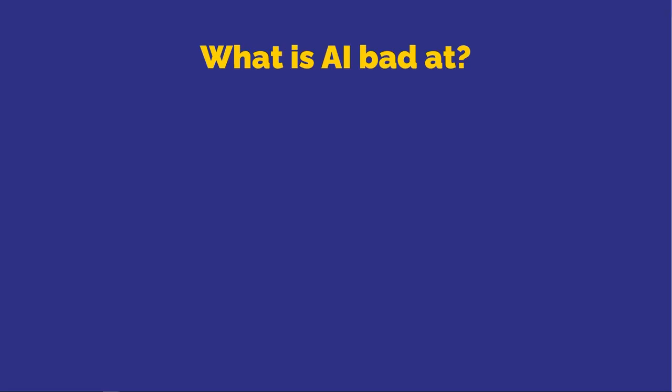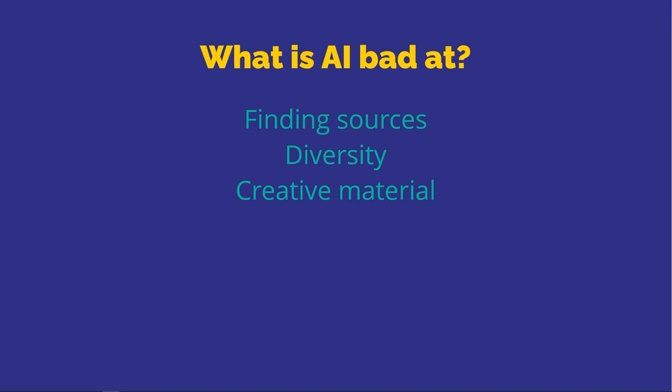Let's talk about the things AI currently isn't great at and what you should avoid using it for. First, you shouldn't use it to find sources — it's just not built to do that. It's not a search engine; it's a generative AI built to generate information. You may eventually get it to give you sources, but you'll still have to go verify them yourself. It's also not very good at diversity — the information it's been trained on primarily comes from one type of culture, meaning we're losing information from many different places and the output is only really relevant to Europe and North America.